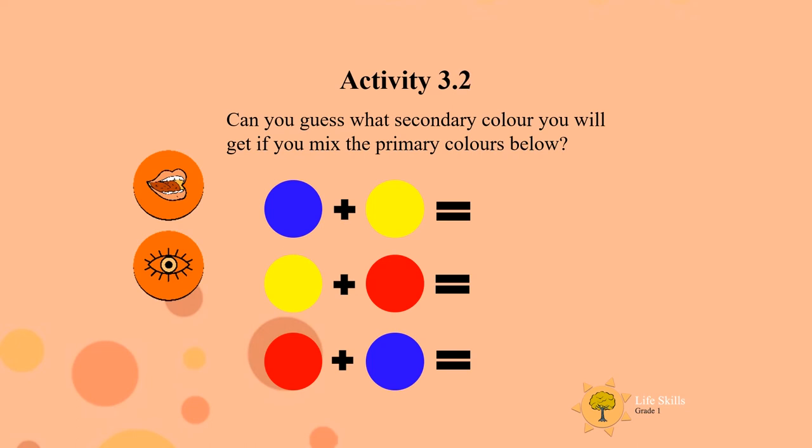Purple. You guessed it! When you mix blue and yellow, you will get green. When you mix yellow and red, together they make orange. And finally, red and blue mixed together gives you purple.